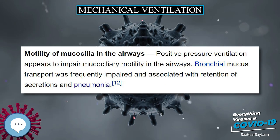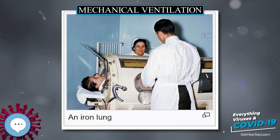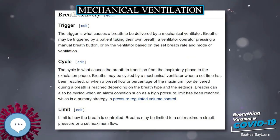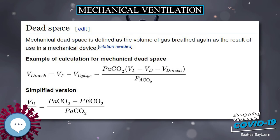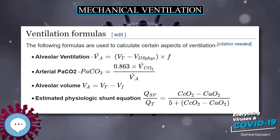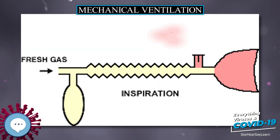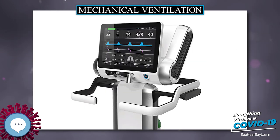Timing of withdrawal from mechanical ventilation, also known as weaning, should be carefully considered. Patients should have their ventilation considered for withdrawal if they are able to support their own ventilation and oxygenation, and this should be assessed continuously. There are several objective parameters to look for when considering withdrawal, but there are no specific criteria that generalize to all patients. The Rapid Shallow Breathing Index, RSBI — the ratio of respiratory frequency to tidal volume, F/VT — previously referred to as the Tobin Index after Dr. Martin Tobin of Loyola University Medical Center, is one of the best studied and most commonly used weaning predictors, with no other predictor having been shown to be superior.